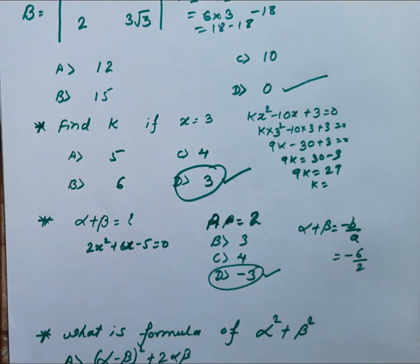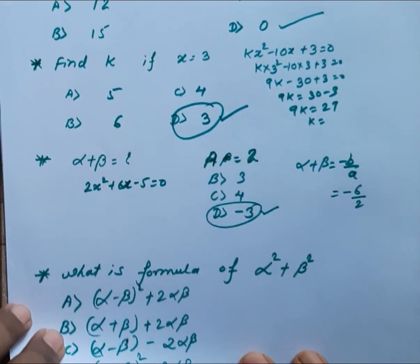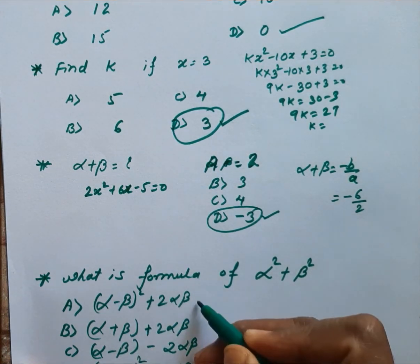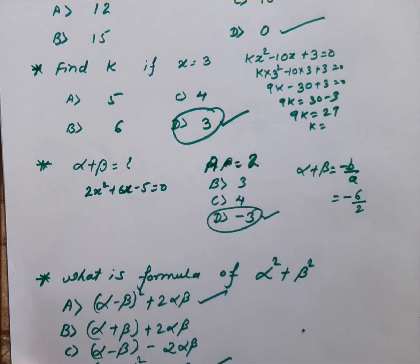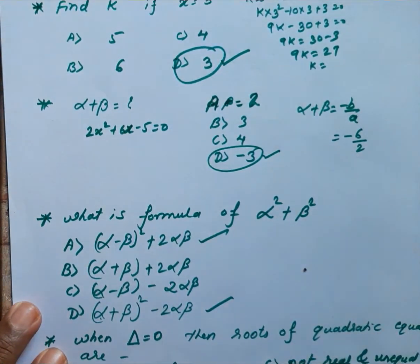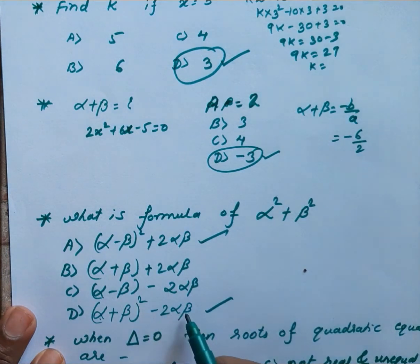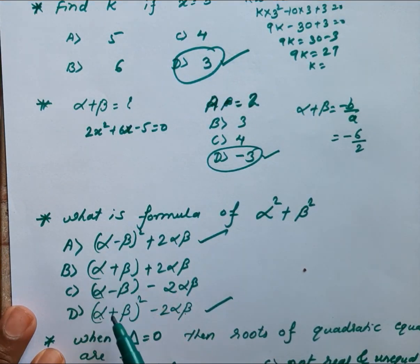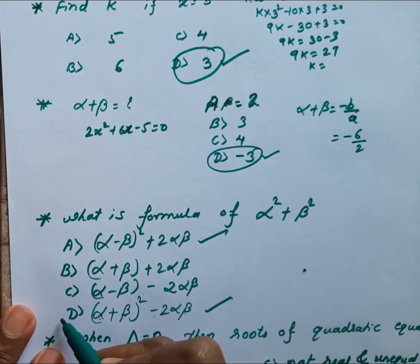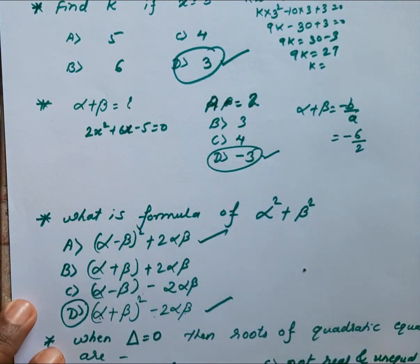Next: what is the formula for alpha² + beta²? You will be confused between options A and D, but the correct answer is (alpha + beta)² − 2·alpha·beta. So our answer is option D. In the question paper, mark it in dark color.